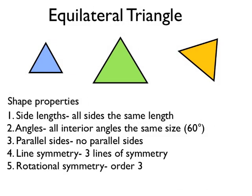So to recap: in an equilateral triangle, all sides are the same length. All the interior angles are the same size — they're all 60 degrees. There are no parallel sides. It has three lines of symmetry and rotational symmetry of order three.